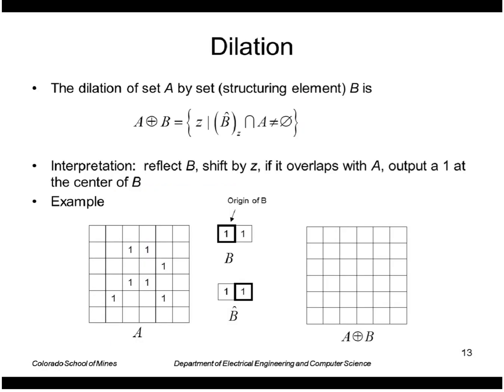Let's look at the opposite of erosion which is dilation. The dilation of a set A by a structuring element B is defined this way. We want all points z such that we take the reflected B, offset it by z, and if that intersects A at all, in other words the intersection is not empty, then that point is in the dilation. Effectively we reflect B, we shift it by z, if it overlaps at all with A we output a one at the center of B.